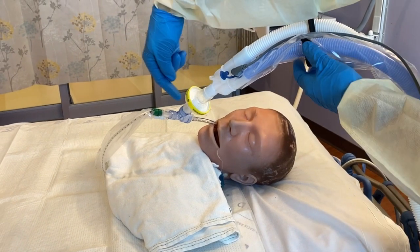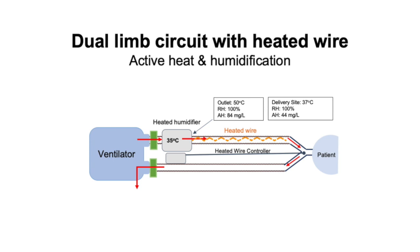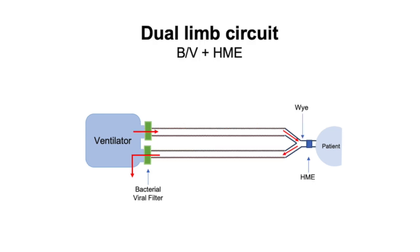Continuing with the inspiratory limb, next we reach the Y and a bacterial viral filter, which is worth pausing on. There are multiple potential locations to place a bacterial viral filter in the circuit. A two-filter setup is commonly recommended. One filter is at the inspiratory takeoff from the ventilator and the second at the expiratory limb as it enters the device. The inspiratory filter helps protect a non-infected patient from a possibly contaminated ventilator, while the expiratory filter helps protect the device, the room environment, and healthcare staff from contamination by aerosolized particles.